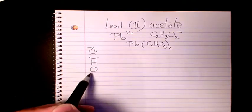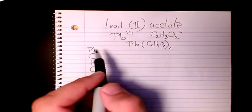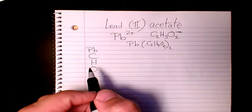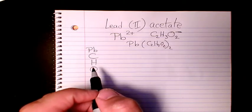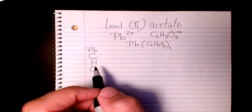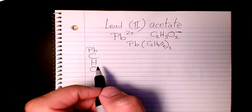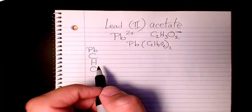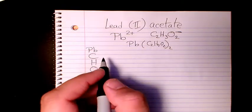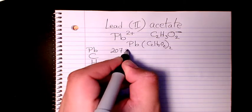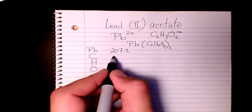Then I need to find out the atomic mass of each element using the periodic table. So Pb is 207.2, carbon is 12.011, hydrogen is 1.008, and oxygen is 15.999.